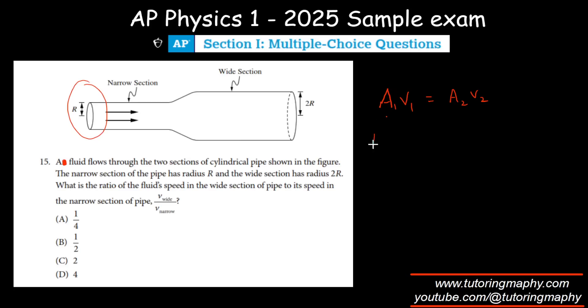These are circles, right? So the area of the circle is pi r square and some velocity v narrow that we do not know. Area 2 is pi times 2r square, so pi times 2r square times v wide.